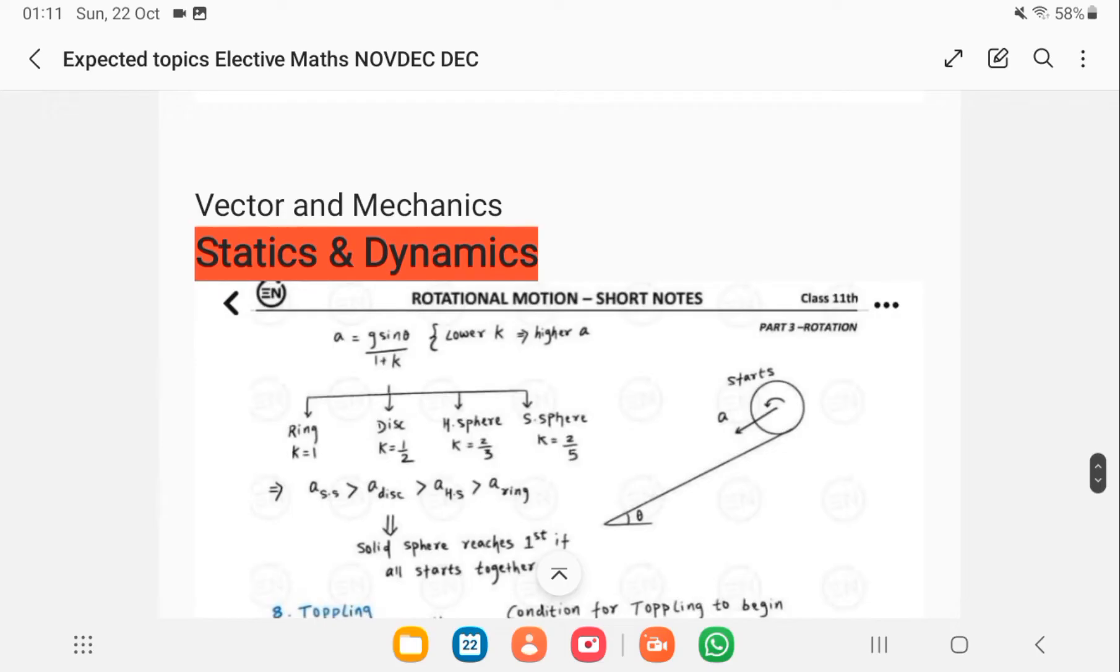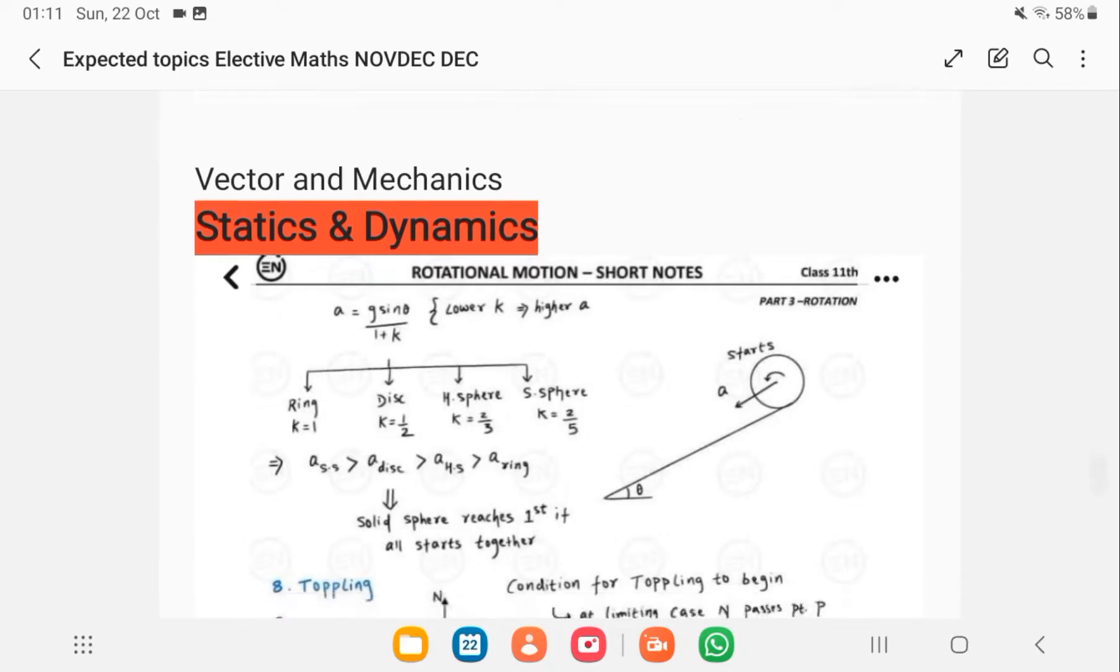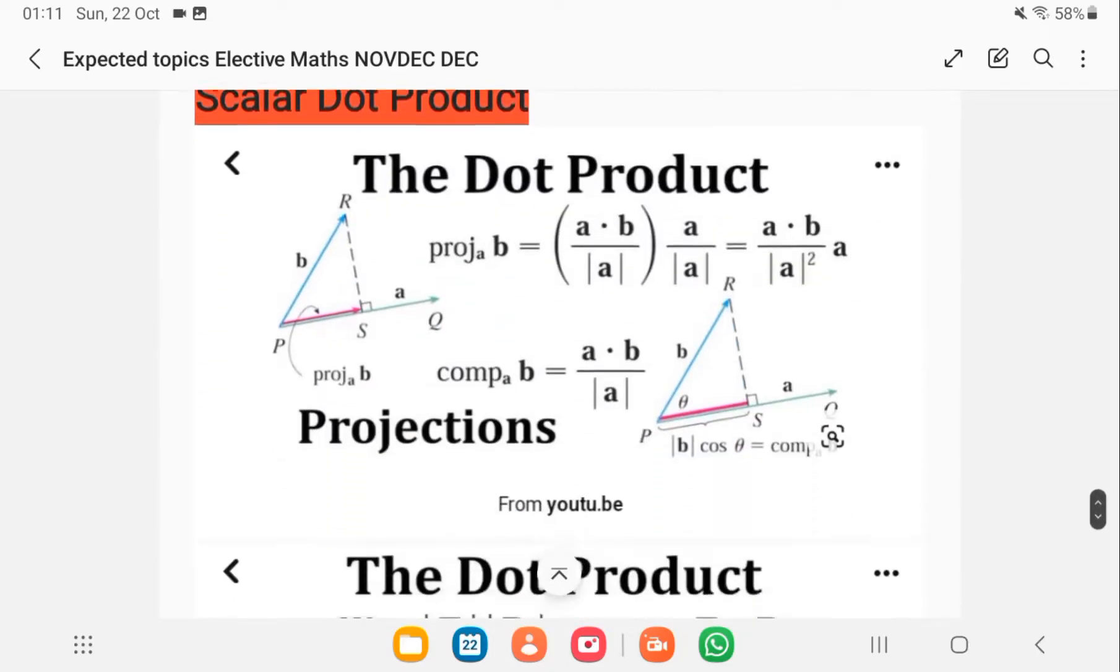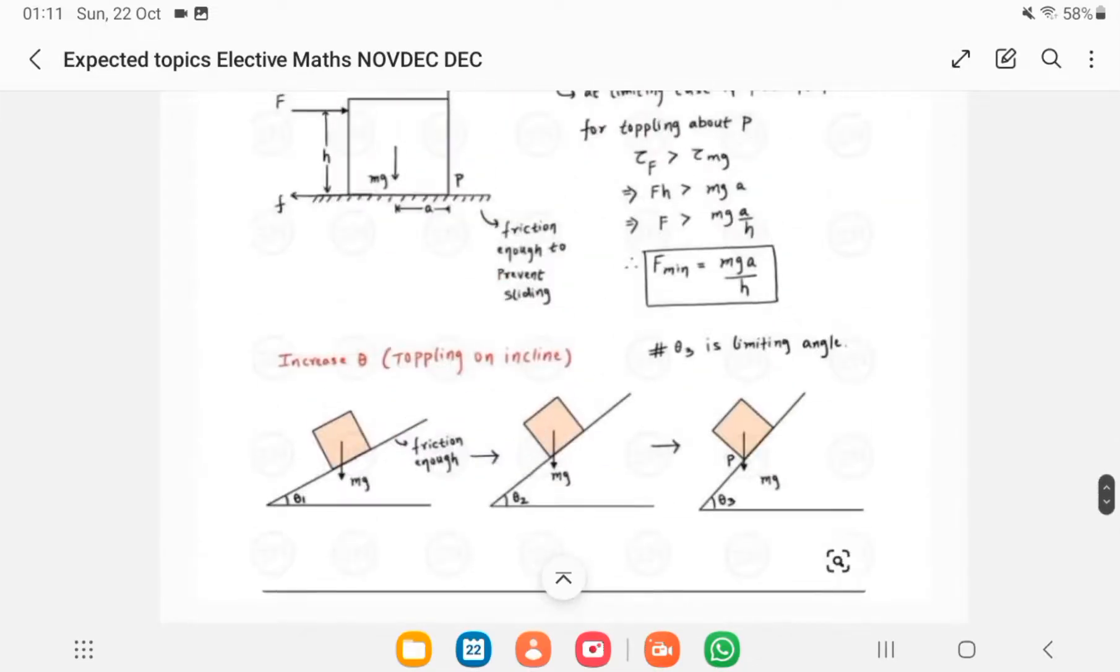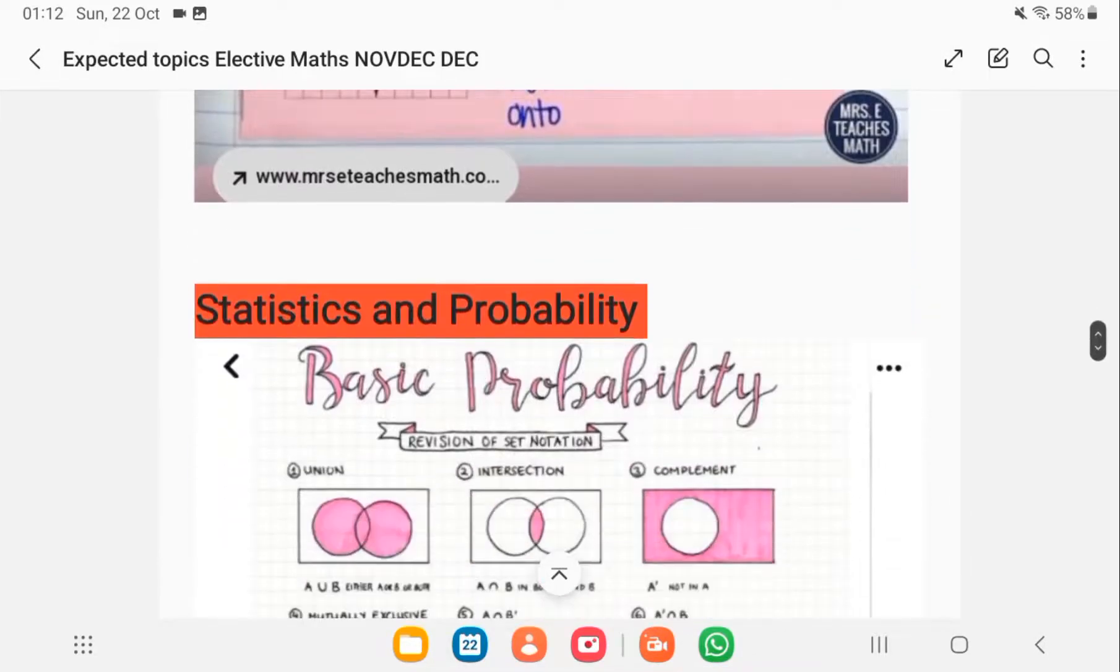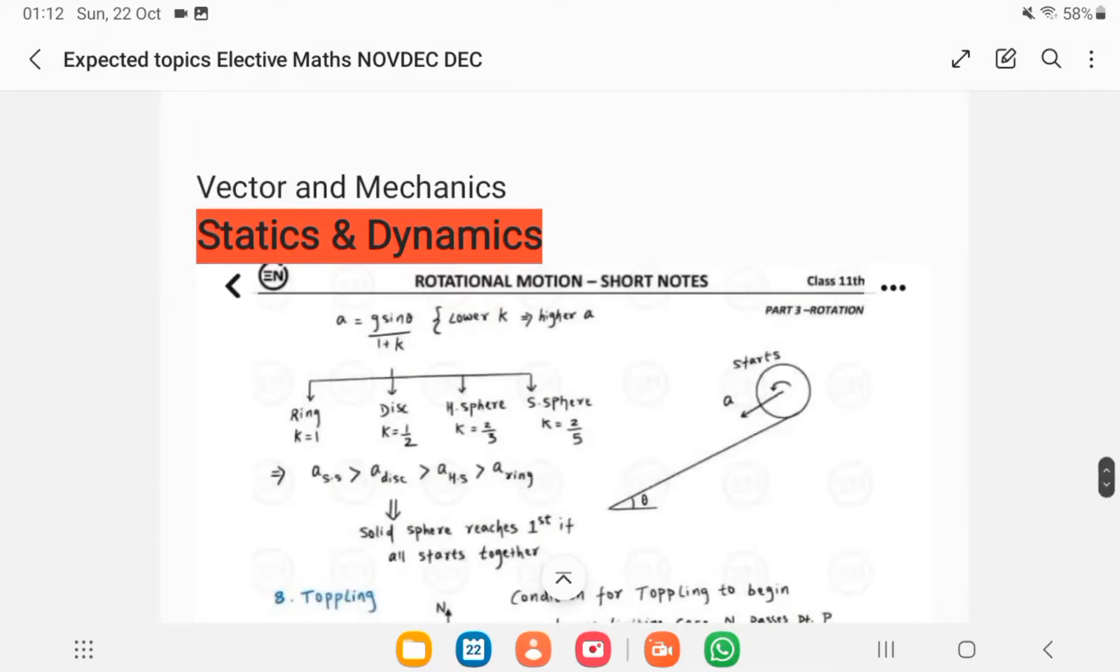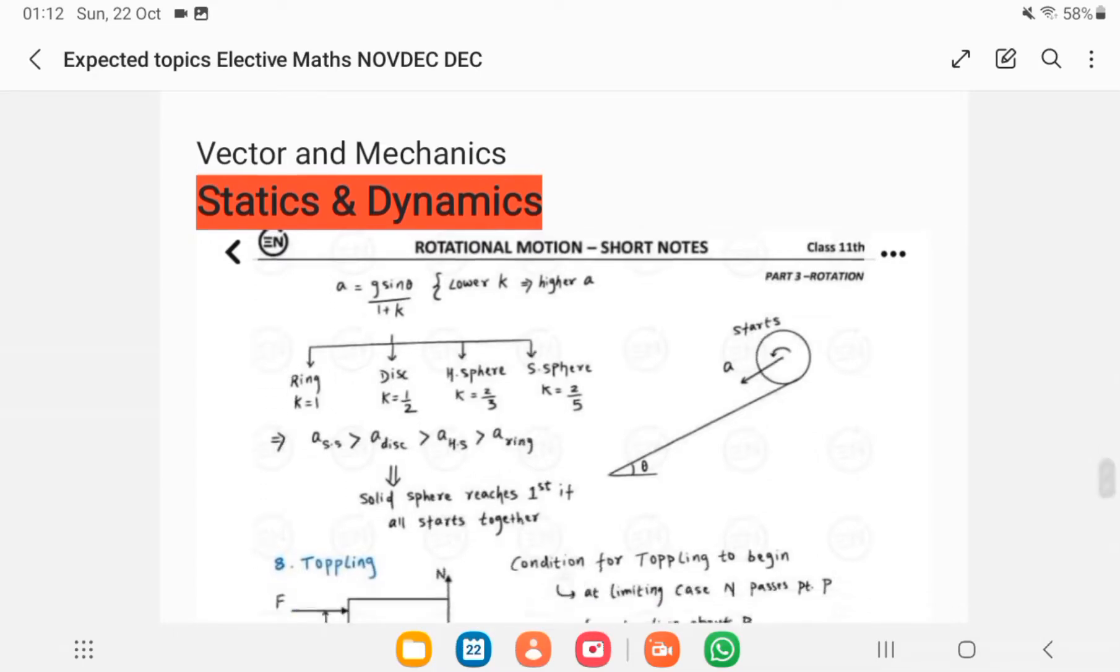Under vectors and mechanics you have statics and dynamics, and then you have the scalar dot product as well. The questions that are asked in the optional part: for statistics and probability, you are sure to always have a question on statistics. For vectors and mechanics, one question is on mechanics, another question is also on vectors.